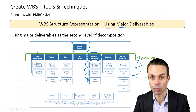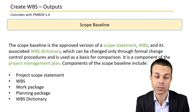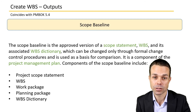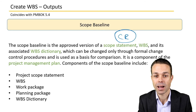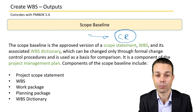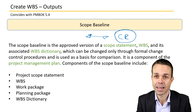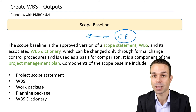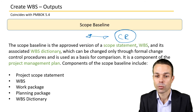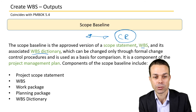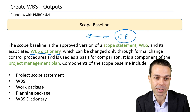The outputs include the scope baseline — putting all this information into the scope baseline, which is our baselined document requiring a change request if changed once baselined. We usually baseline it after we have the Work Breakdown Structure, not before, to avoid going through a change request just to add detail. You might also use an iterative approach, which can be written into your project management plan. The scope baseline includes the scope statement, Work Breakdown Structure, and the associated WBS dictionary.